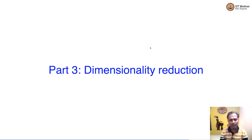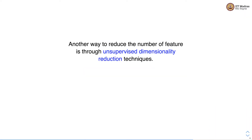Namaste, welcome to the next video of the machine learning practice course. In this video we'll study dimensionality reduction. So far we looked at wrapper-based and filter-based feature selection methods. The objective of feature selection is to reduce the number of features so that it becomes more efficient to train the model.